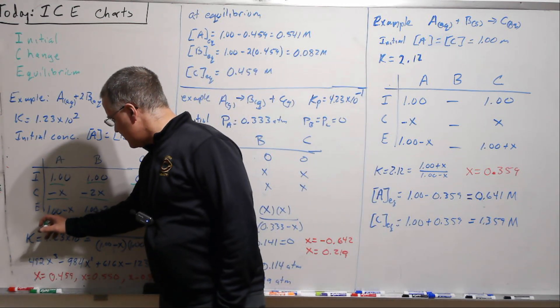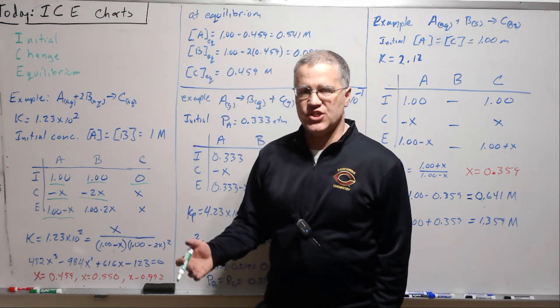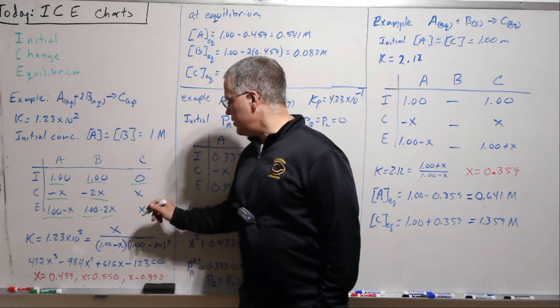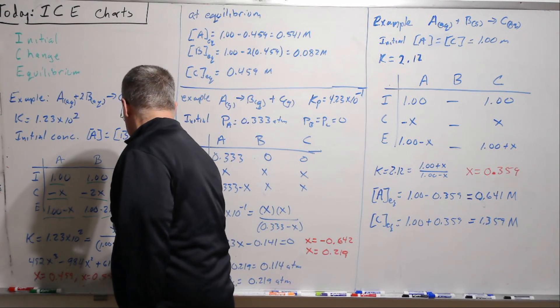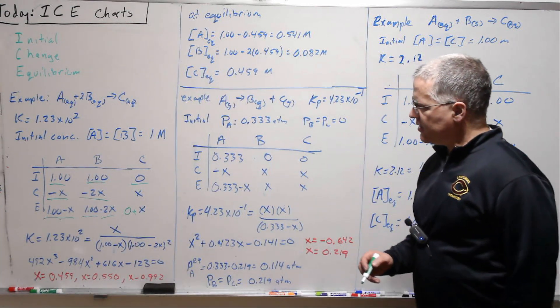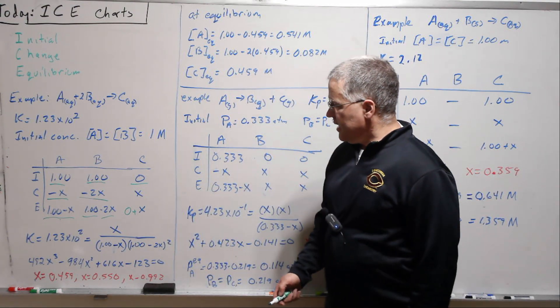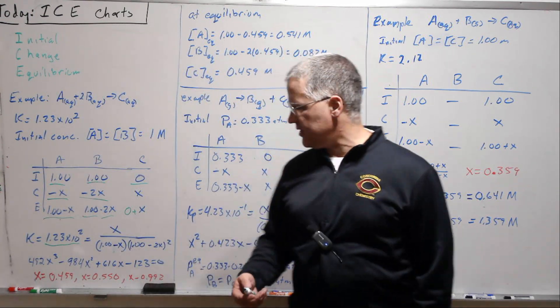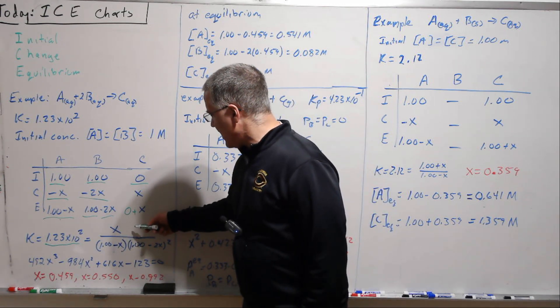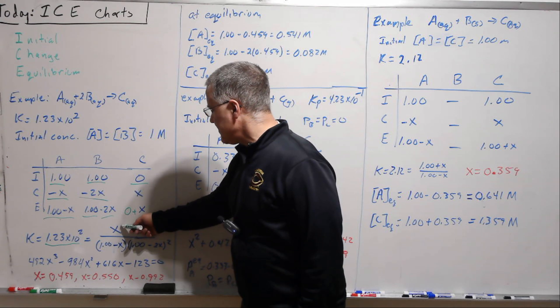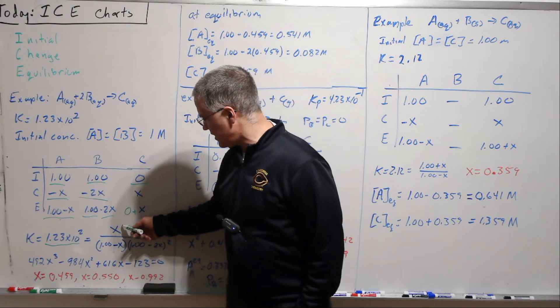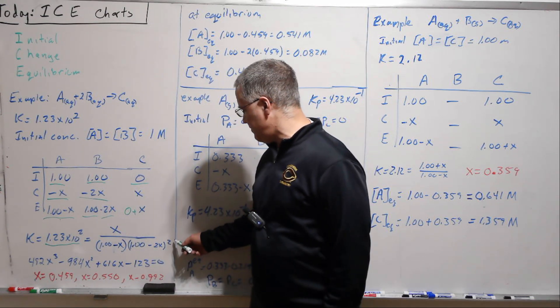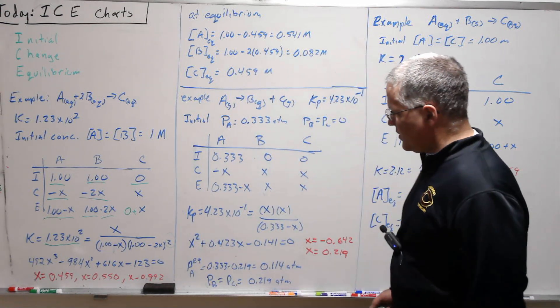All right, so now we write the equilibrium. So at equilibrium, this will be just whatever we started with minus what we change, and then this will be whatever we started with minus what we change, so 1 minus X, 1 minus 2X, and then C, this is really, so what this is really, 0 plus X, but we don't write that, so it's just X because C will be the change. Then we are given our K, so in all these problems we're given the K, we're trying to figure out the final concentrations, and so we know that K is products raised to their stoichiometric factors, so C to the 1, concentration of C to the 1, concentration of A to the 1, concentration of B to the 2, and so we get that.